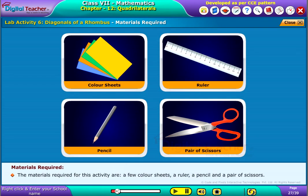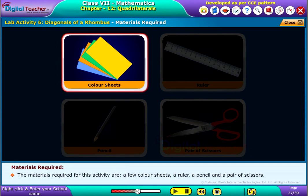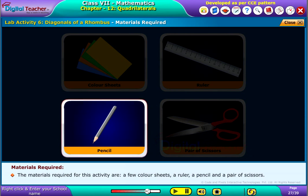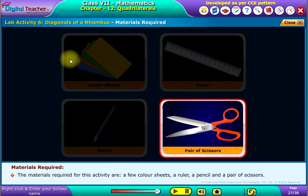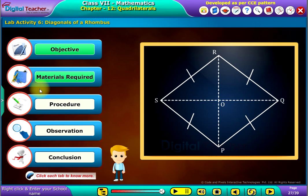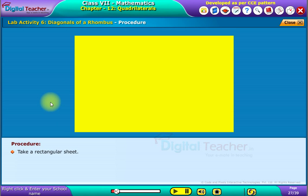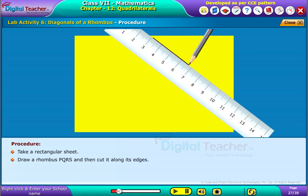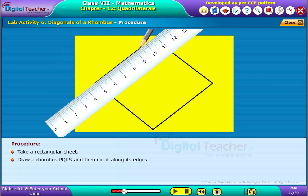The materials required for this activity are a few color sheets, a ruler, a pencil, and a pair of scissors. Take a rectangular sheet, draw a rhombus PQRS, and then cut it along its edges.